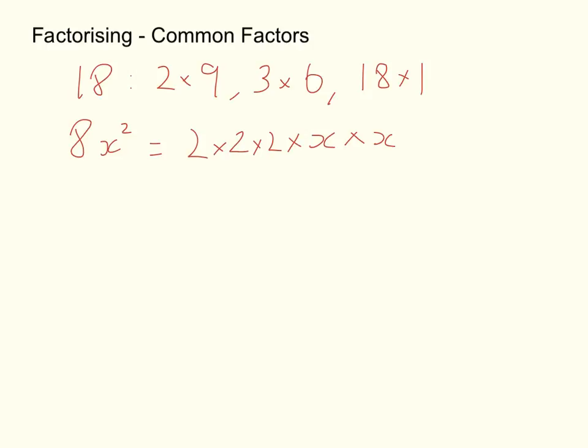So that's all the factors that go in to make up our 8x squared. Now we could write that as 4 times 2 times x times x or lots of other different combinations. I've used the prime factors there of 2's, but that's going to be important for us when we're looking at finding common factors between terms.